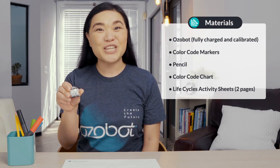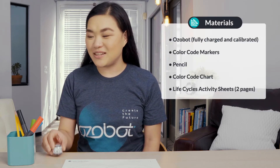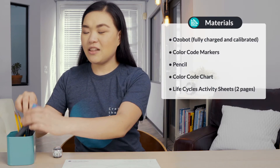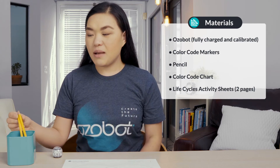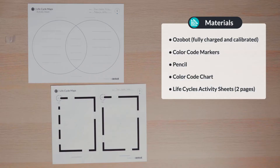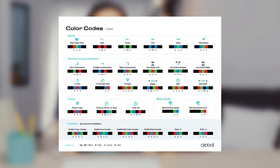For today's lesson, you will need an Ozobot fully charged and calibrated, color code markers, a pencil, both pages of your life cycles activity sheets, and a color code chart.